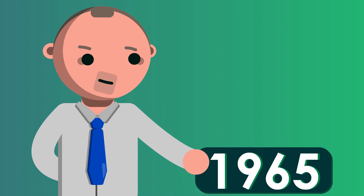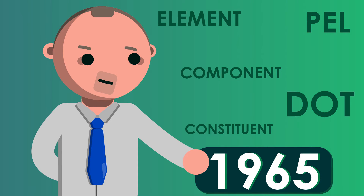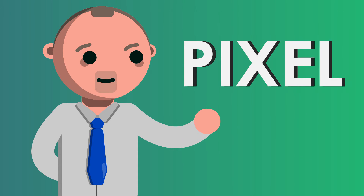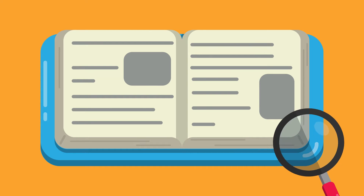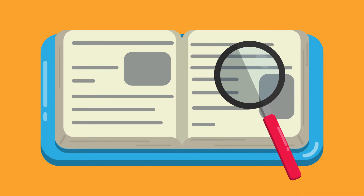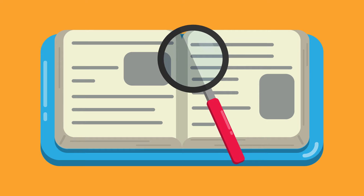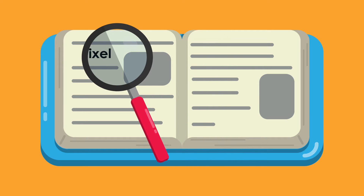In 1965, Fred C. Billingsley published an article which was the first official introduction of the word pixel. Today, the term is used in the areas of digital displays, computer graphics, cameras, and printers, with a definition that is somewhat clashing.